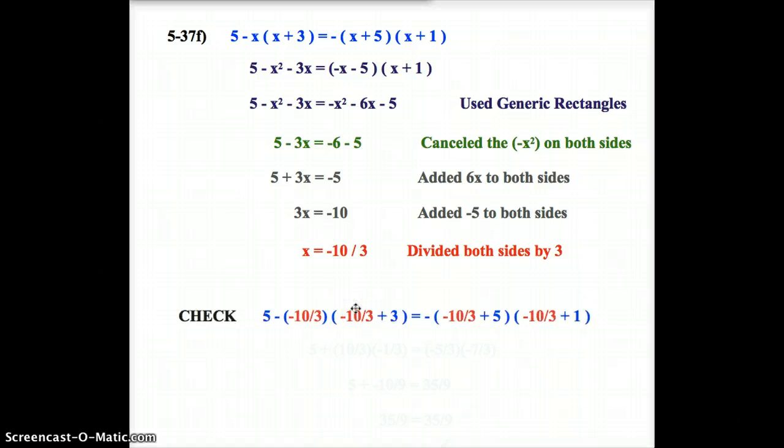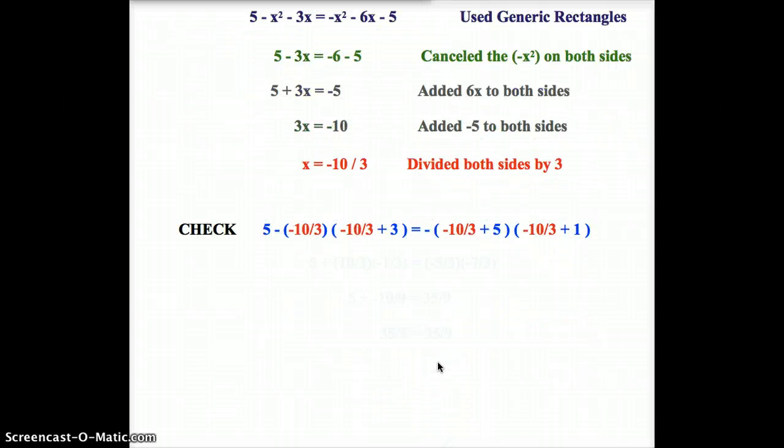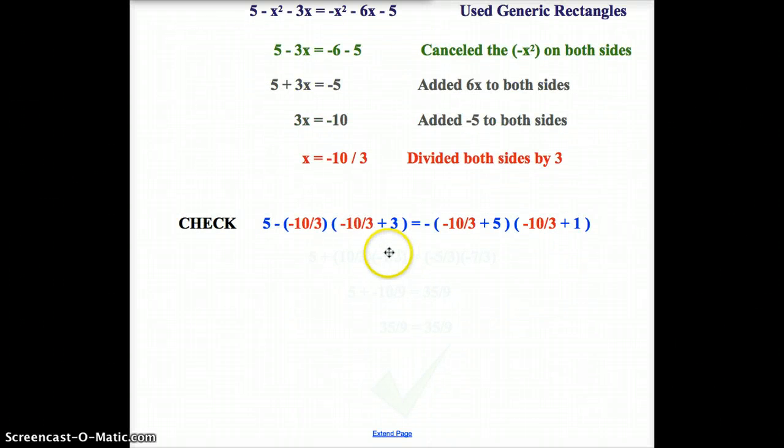So, to check our work, we take the original equation right up here in blue, and we recopy it right down here. I put it in blue again, except for everywhere there's an x term. I've now substituted in my negative 10 thirds. Now that I've done that, I'm going to zoom this up a little bit here.